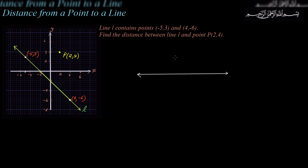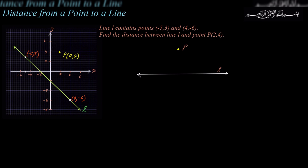The first thing to appreciate is that the distance between a point and a line is the perpendicular distance from that point to the line. If I have this particular point P, how far is this from line L? To measure the distance between a point and a line, we measure the perpendicular distance — like this segment here, perpendicular to the line. The length of that segment would be the distance of the point to the line.